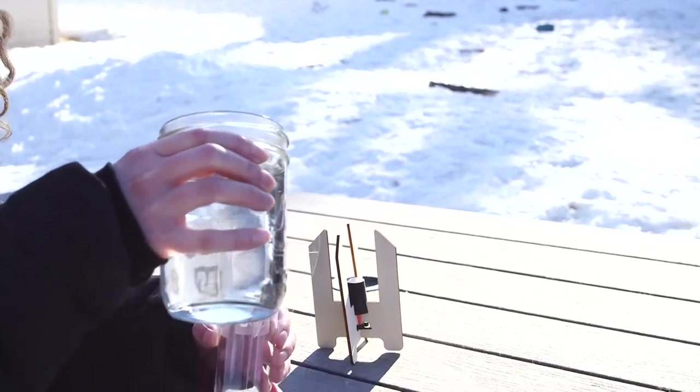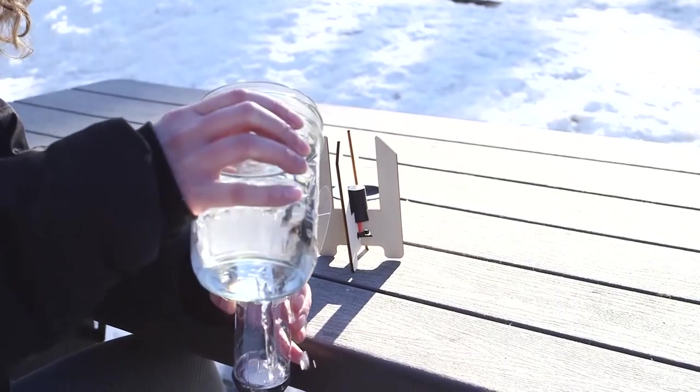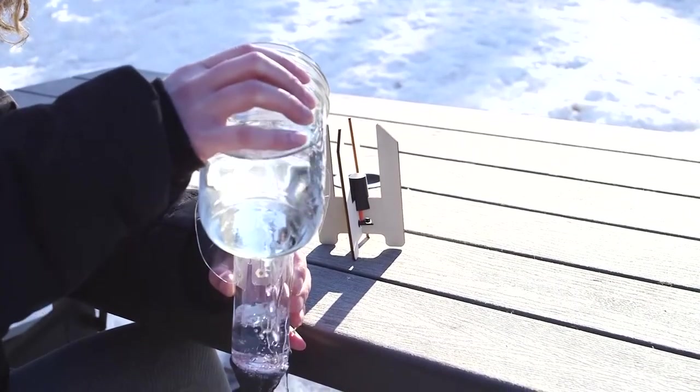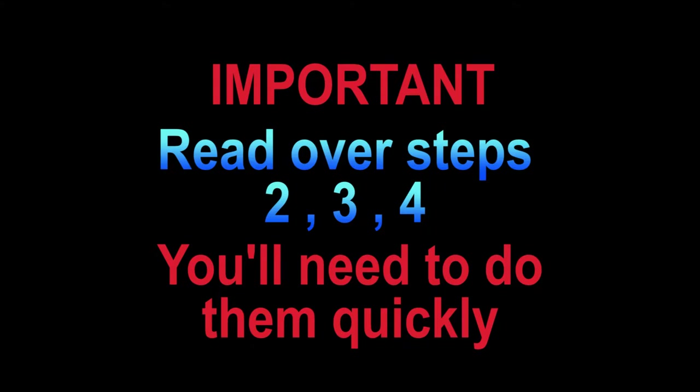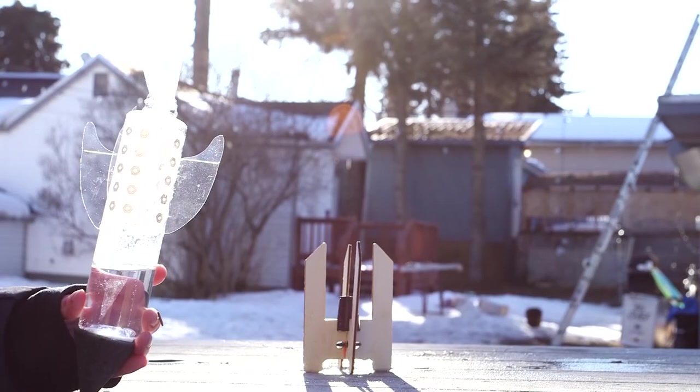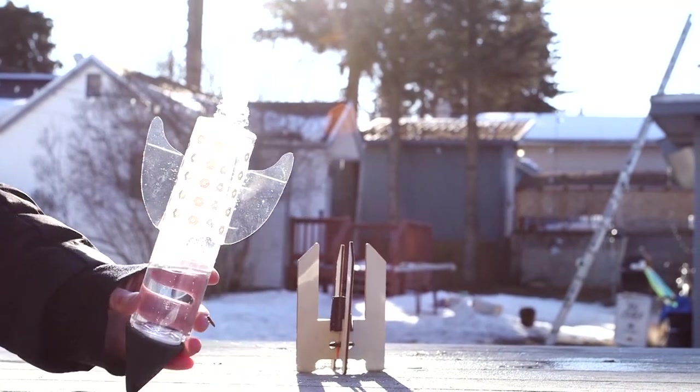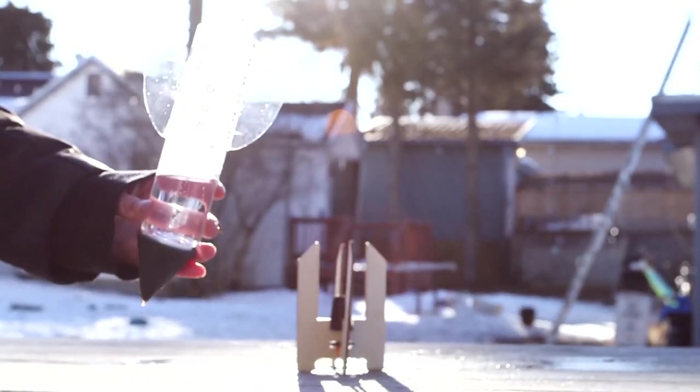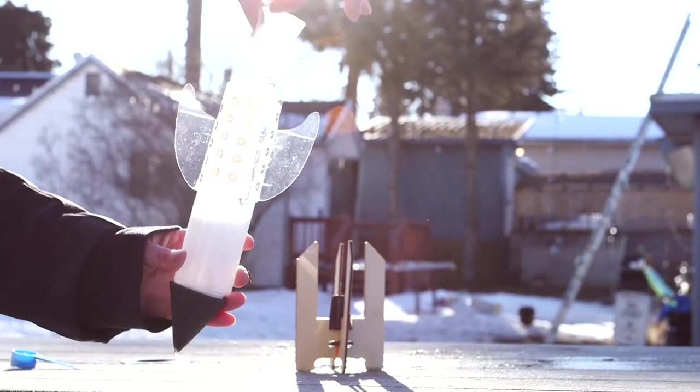Step one: fill the rocket a quarter full of water. Step number two: use the funnel to add one scoop of the launch mixture into the rocket. Immediately press the launcher down onto the rocket.